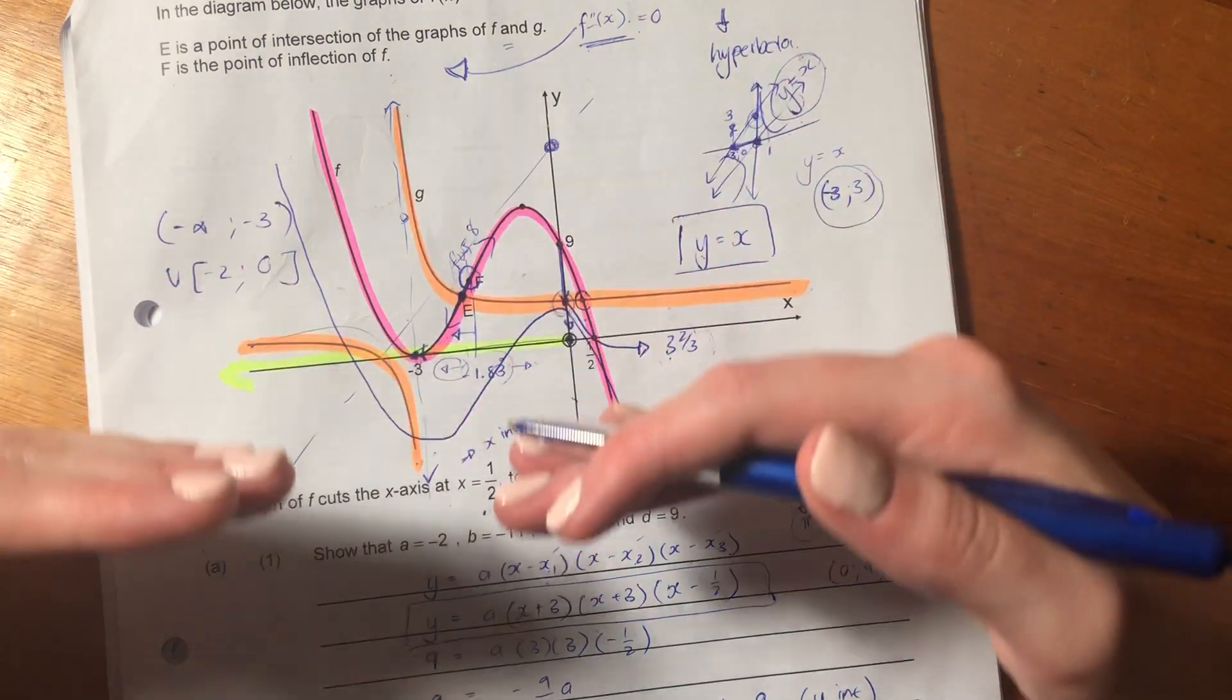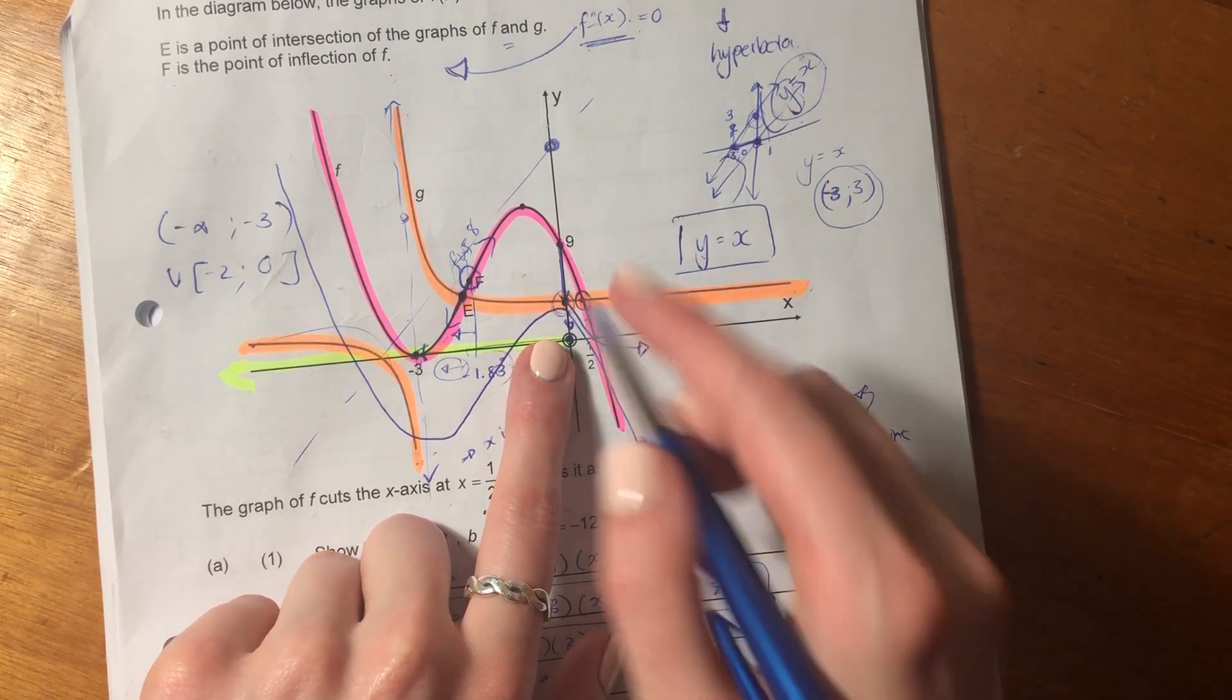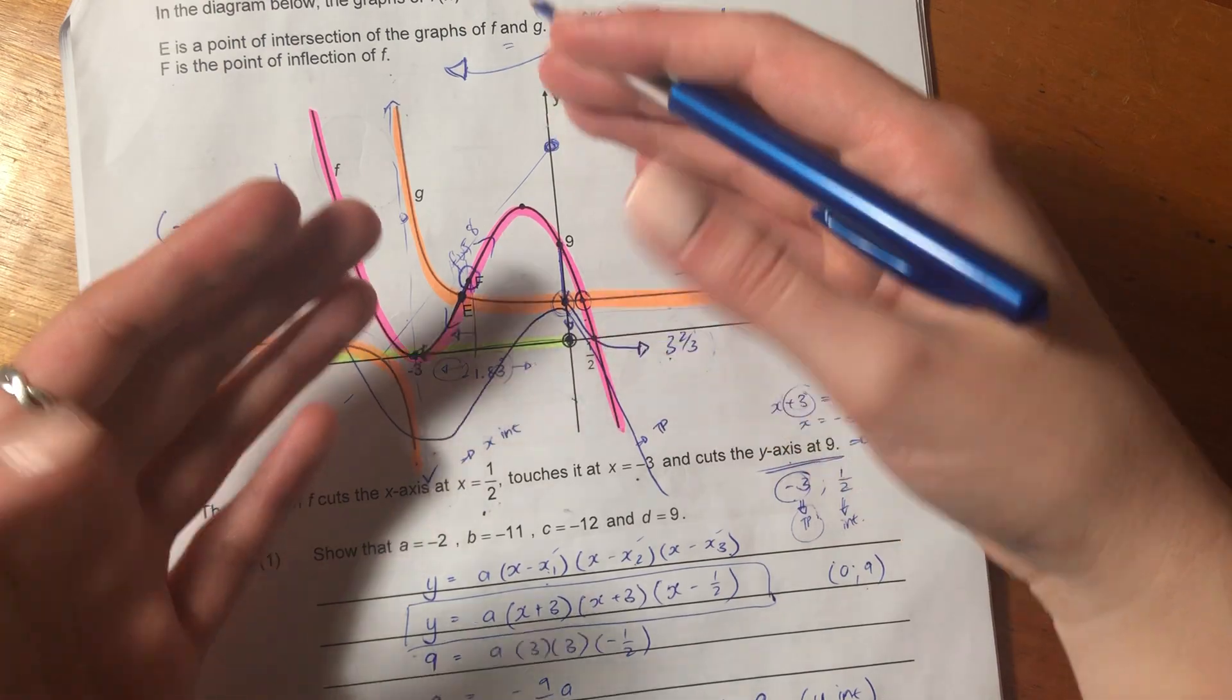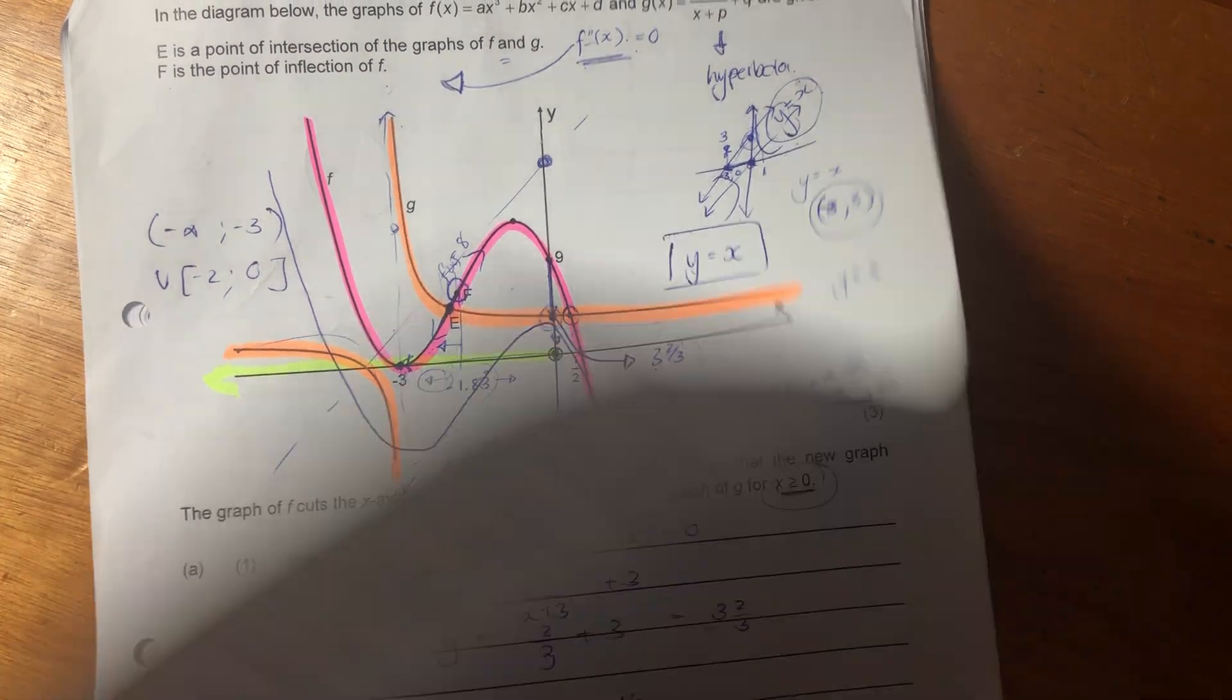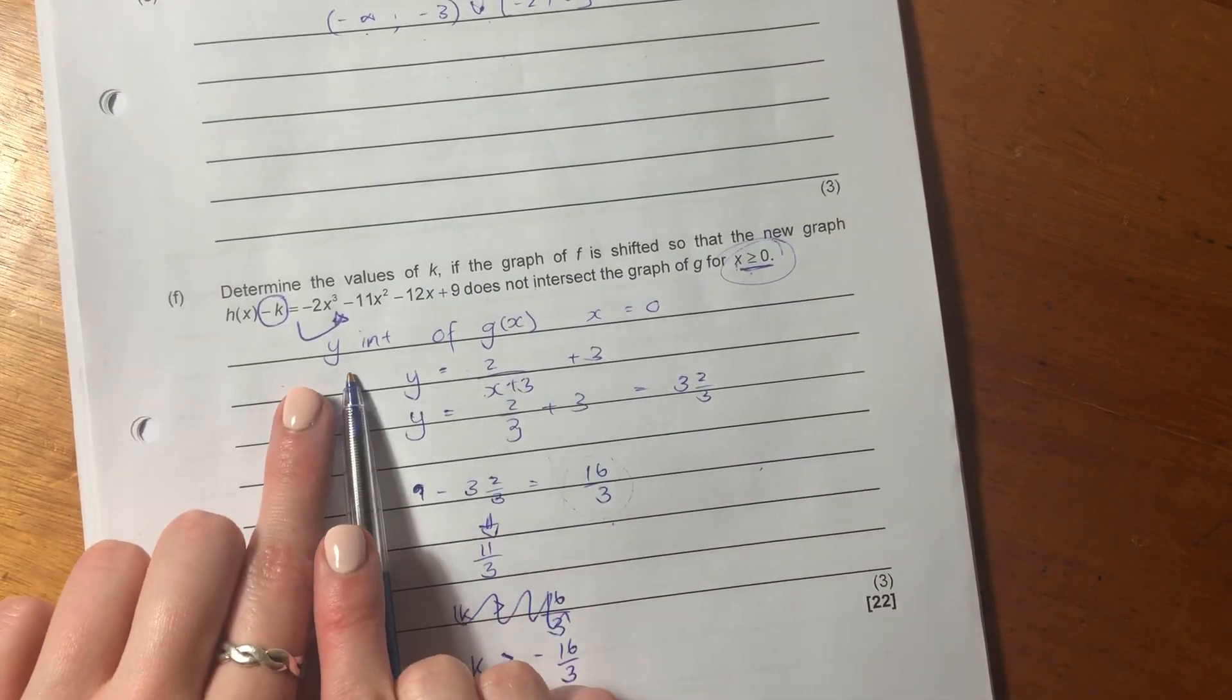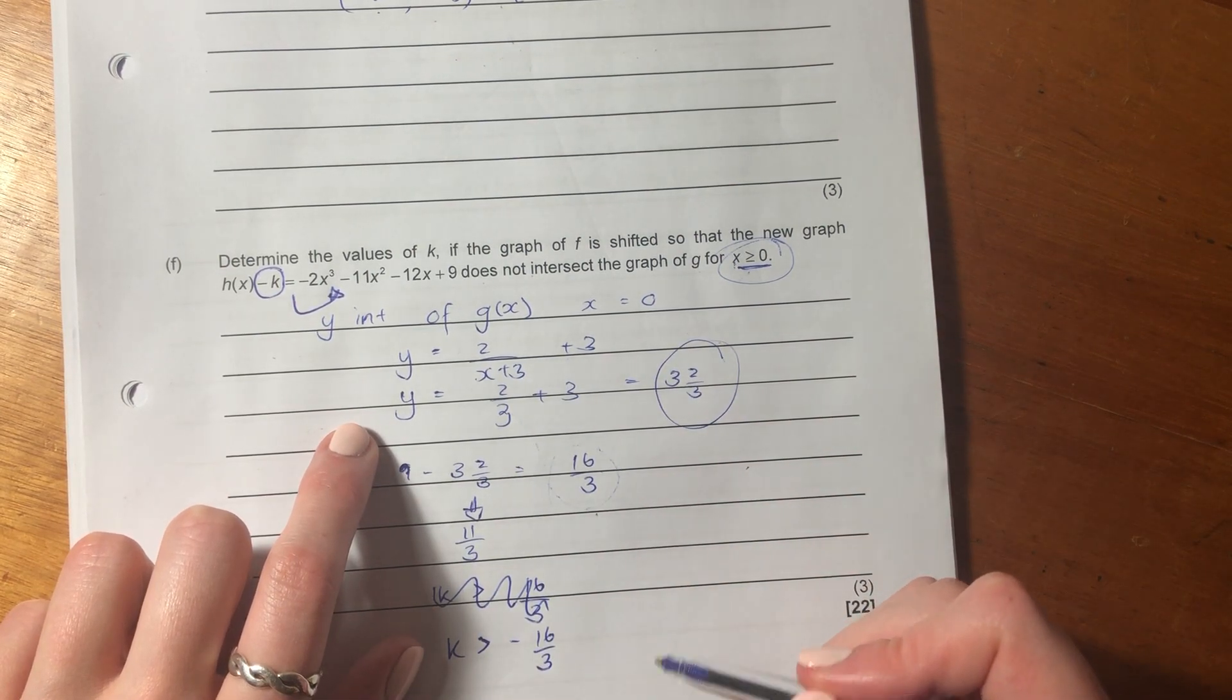And what they've asked us is they're saying it does not intersect the graph for where X is positive or equal to zero. So shifting it up is not going to help us. Shifting it down may. So if I shift my graph down, if I move my Y intercept down, then what happens is it will intersect with the Y axis at a point below where this G of X graph is. And then it will never intersect with G of X again because G of X has an asymptote over there. So it never gets below the point. Was that three? I think it was three. That was where Y equals three.